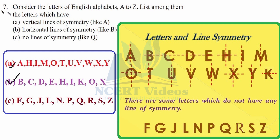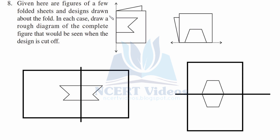Question eight: here are figures of folded paper sheets with designs drawn on the fold. In each case, draw a rough diagram of what the complete pattern would look like when the design is cut and unfolded. Part A: the vertical fold produces a symmetrical figure when opened. Part B: when the paper is flipped downward, you get a specific cut-out pattern. You can also do this practically to verify the result.